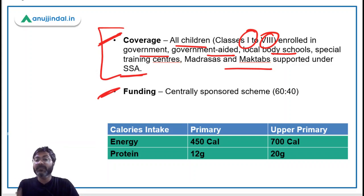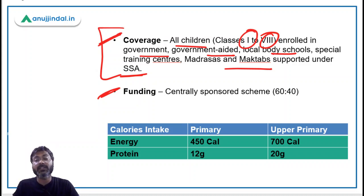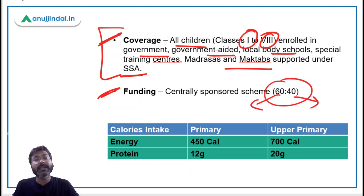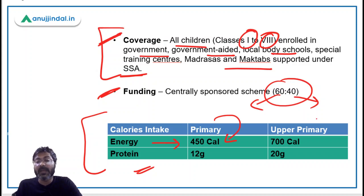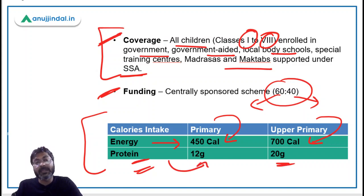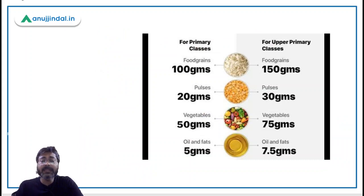The funding ratio is 60:40 — 60% by the central government and 40% by the state governments. For nutritional requirements, primary students need a minimum energy intake of 450 calories, while upper primary students require 700 calories. For protein, primary students require 12 grams and upper primary students require 20 grams.